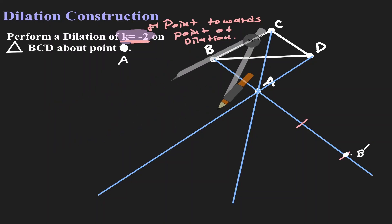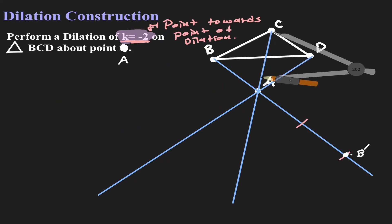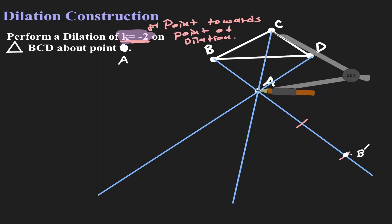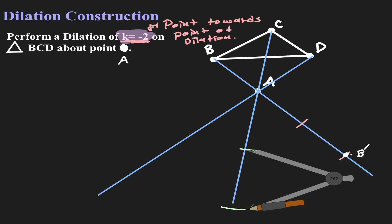Let's do the same for C. Let's place the metal leg on C and find the original distance towards A. Now that we have that distance, let's double it starting from A — so this is one distance, and this is two distances. Let me enlarge this line. This location is where we are going to find C', where C got dilated from point A with a scale factor of 2 in a negative direction.